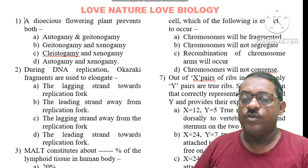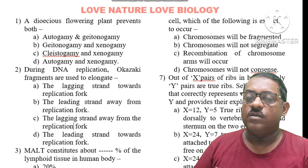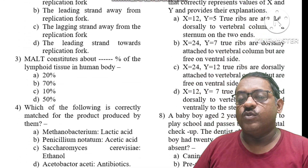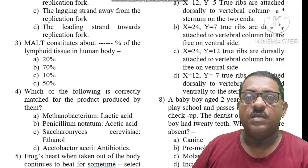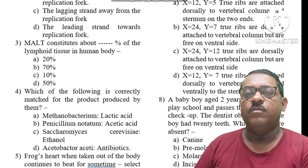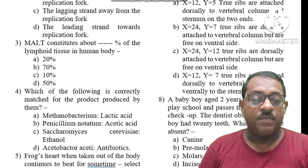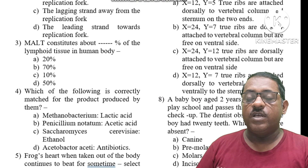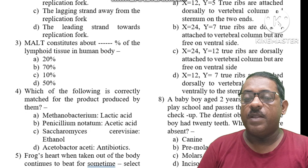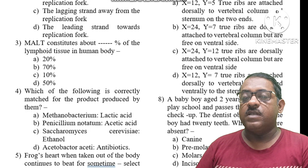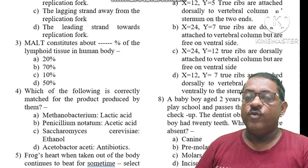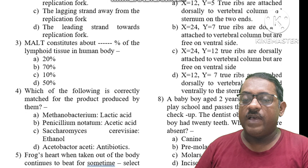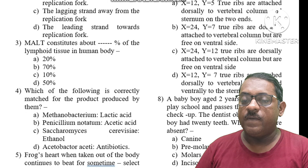MALT — Mucosal Associated Lymphoid Tissue — constitutes about 50% of lymphoid tissue in the human body. The digestive system and respiratory tract lining are both part of the mucus-associated lymphatic tissue, which accounts for approximately 50%.